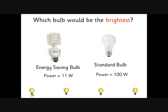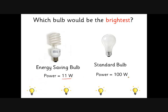Here's a little example to get you started. Here are two light bulbs. The energy efficient bulb says 11 watts on it, and the standard filament lamp says 100 watts. You might think, which one is actually going to be brightest? Well, brightness depends not on how much energy you put in every second, but how much energy comes out as light. In this case, of those 11 watts, 10 watts come out as light.